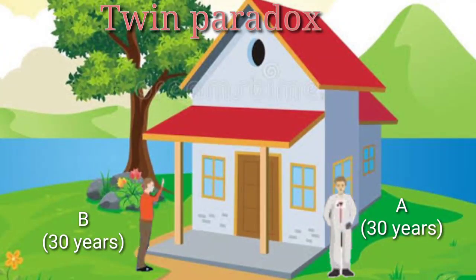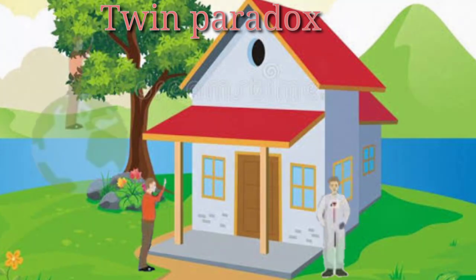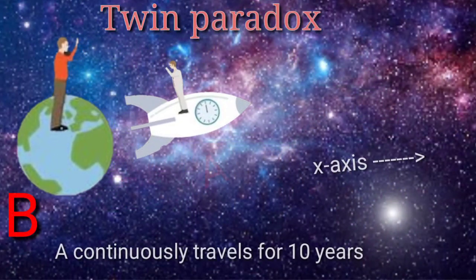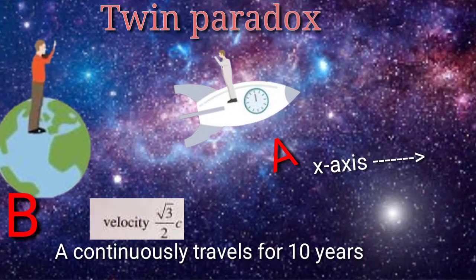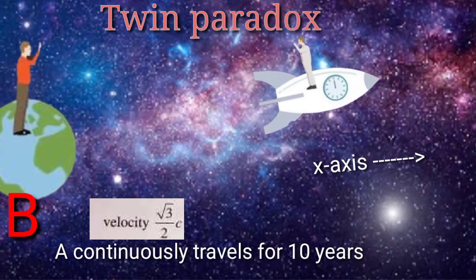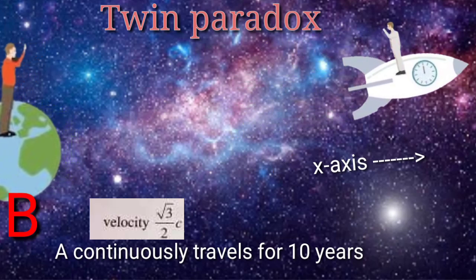So let us consider two twin brothers A and B, and both have the age of 30. Now they decided to study time dilation. And the brother A goes into a spaceship at the speed of root 3 by 2 C, and he continuously travels for 10 years. This 10 years time is measured by A himself.